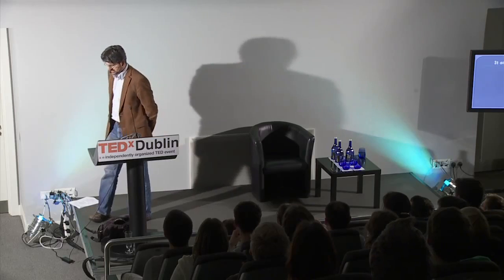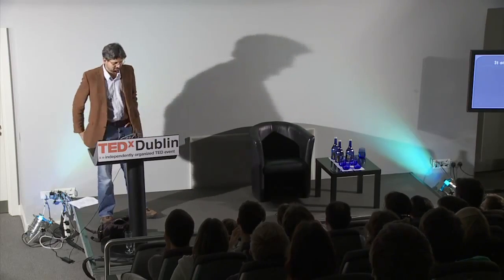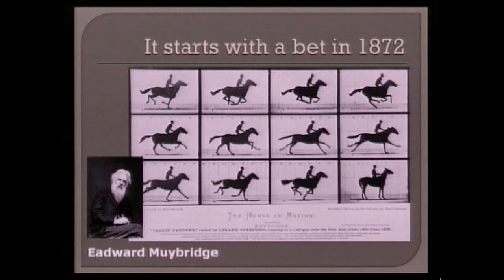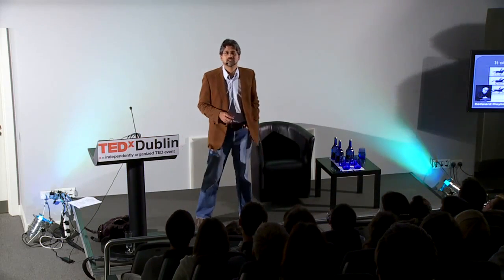A guy called Leland Stanford made a bet. He wanted to know whether there was at some point in a horse's gallop that all the forelegs were off the ground. He enlisted the services of a man called Edward Muybridge. Muybridge spent from 1872 to about 1878 trying to solve this problem — about six years. In 1878, he published this series of pictures showing two frames where the horse's feet were indeed off the ground. He went on to publish a famous book called Animal Locomotion, and everybody in the animation industry knows about it today.